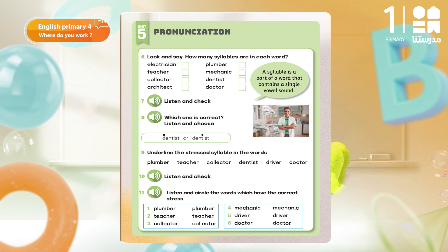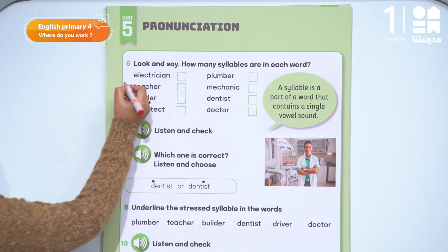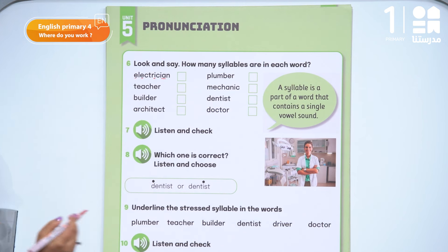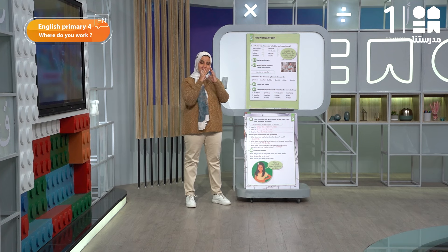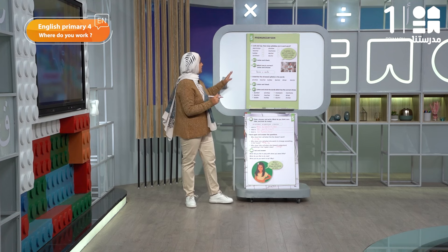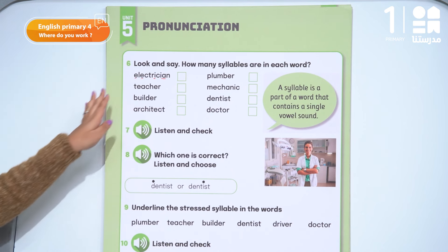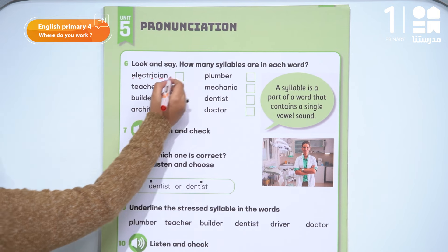Let's look at the first one: 'electrician.' How many vowels are in this word? I have E, another E, I, and E and E — I consider them one vowel because the two together make a long vowel. So I divide the word into four syllables: one, two, three, four. The number will be four.